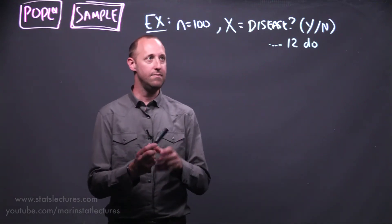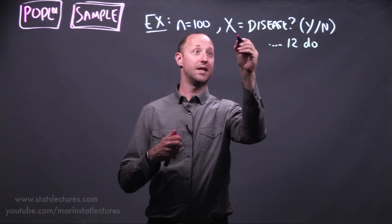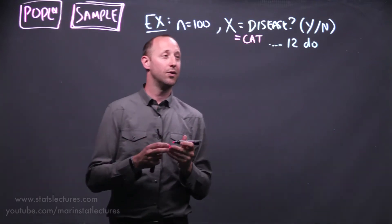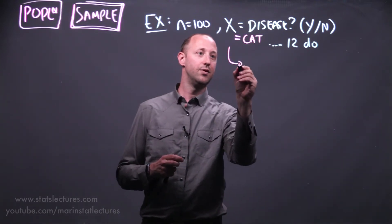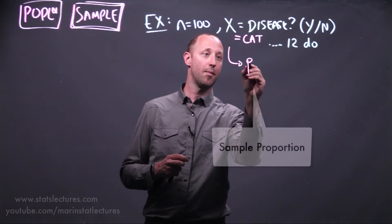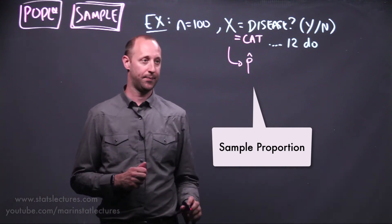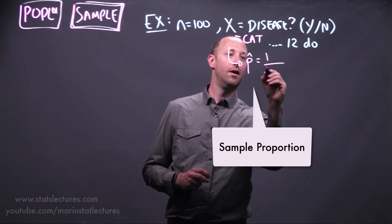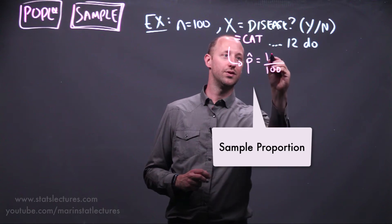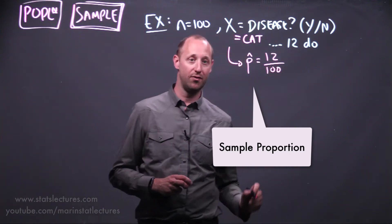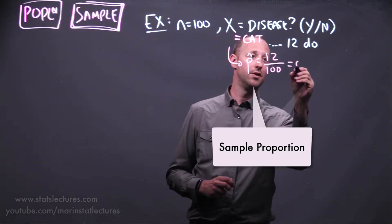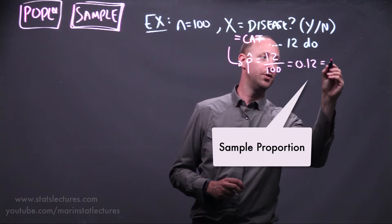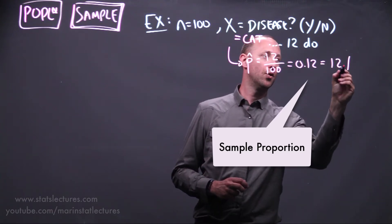Here, our x variable is categorical, and so we're going to summarize this using a sample proportion which we'll label p-hat. Out of our 100 individuals, 12 had the disease in the sample, so our sample proportion is 0.12 or 12%.